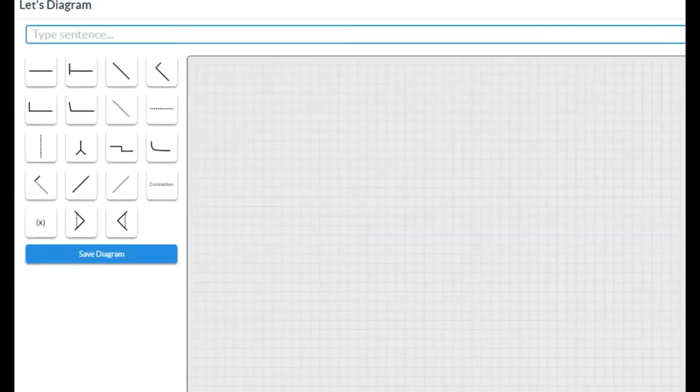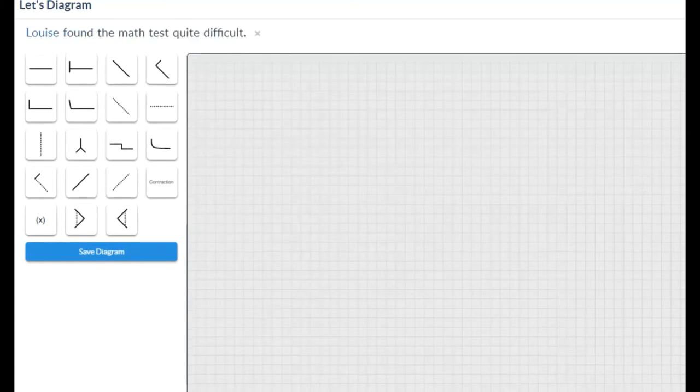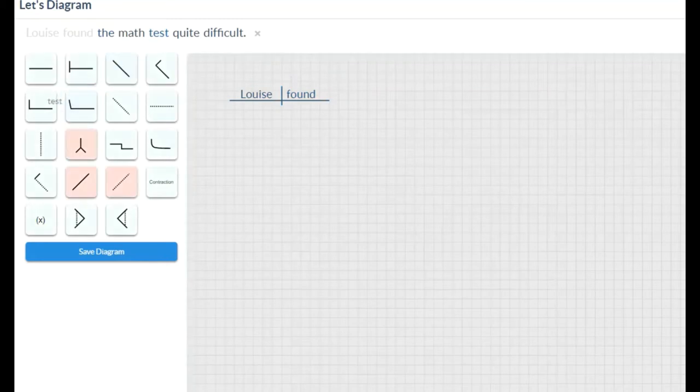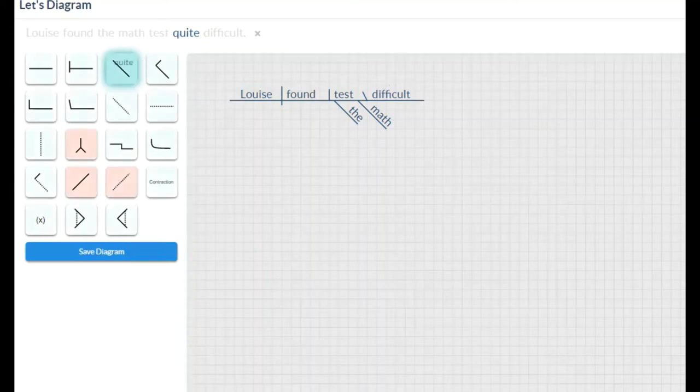Okay, but first let's diagram one together. So let's look at sentence number one. Louise found the math test quite difficult. Okay, so the subject we know is Louise. She's the one doing the action here. What did she do? She found. Found what? She found the test. Okay, so test is the direct object. Which test? The test. What kind of test? She found the math test quite difficult. So here we have some adjectives, and then the objective complement here is she found the test how? She found it difficult. So it fits in just like this. How difficult? Quite difficult. The math test was much more difficult than diagramming the sentence. So go ahead and do the rest. Good luck and enjoy.